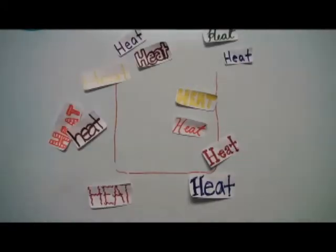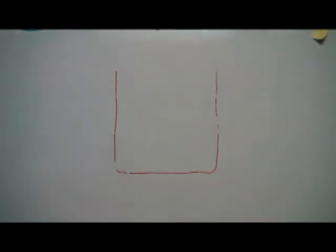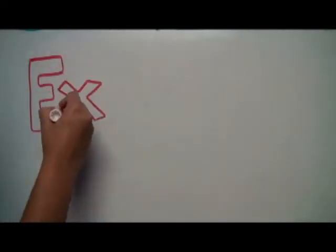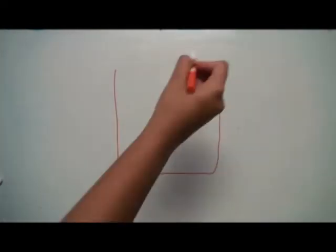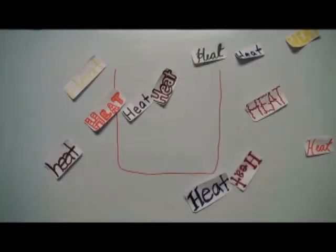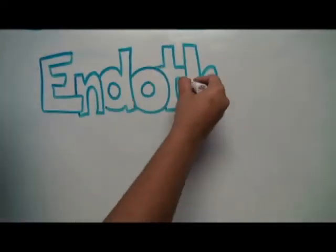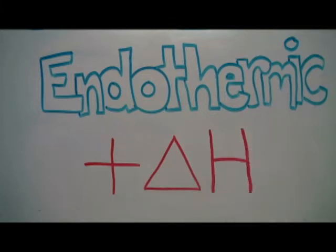If this speaker were the system, the white space around it would be the surrounding. In terms of enthalpy, this is represented by a negative delta H value. On the other hand, an endothermic reaction occurs when the heat from the surroundings enters the system. As you've probably guessed, in terms of enthalpy, this would be a positive value.